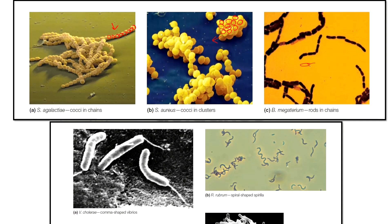As you can see, there are rods and they are not present in a chain — we call it streptobacilli. Some bacteria have a particular shape. Here we call the comma-shaped bacteria — for example, Vibrio. Here we call spiral-shaped bacteria — they have a spiral shape.